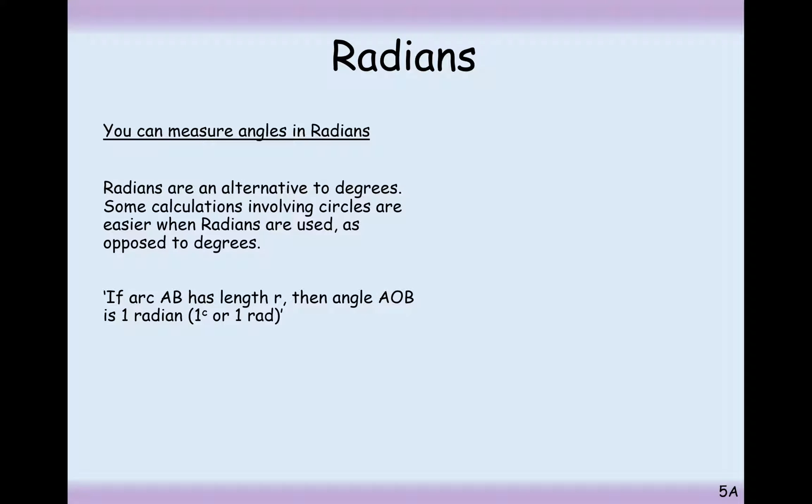So how are they easiest described? If arc length AB, so let's make an arc length A to B, has length r, then the angle AOB is equal to one radian. So that's to say that the radius is equal to the arc length when the angle inside that sector is equal to one. So the arc length is equal to the radius when the angle inside here is one. So radians don't get very big.